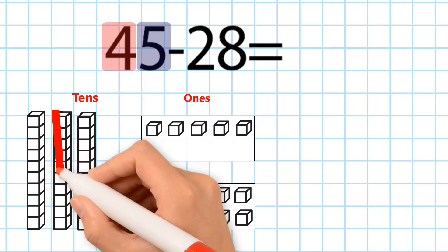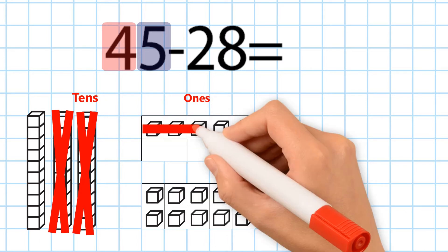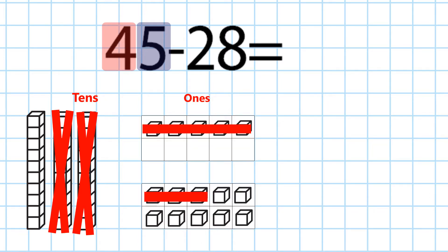Then you cross out 2 tens from 28 and 8 ones from 28. Now you have 1 ten and 7 ones.